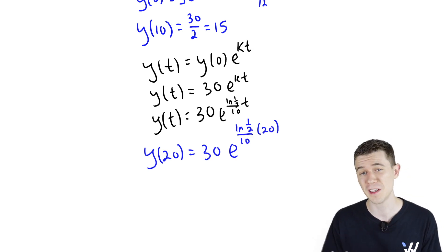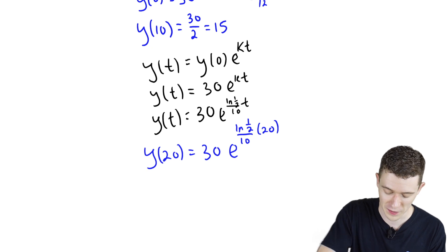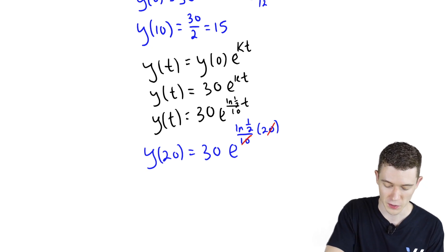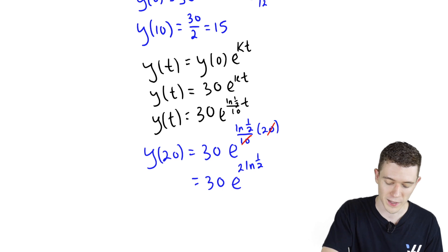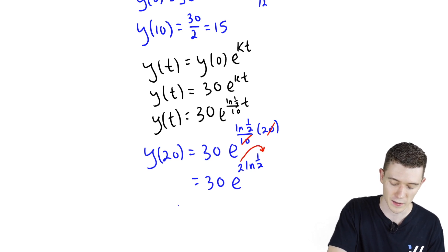And I think we can actually do a few nice things with properties of logarithms. Certainly, 20 over 10 makes 2. So in the exponent here, we have e^(2 natural log of 1/2). We can write that coefficient as the exponent of the inside. This could say 30e^(natural log of 1/2 squared).